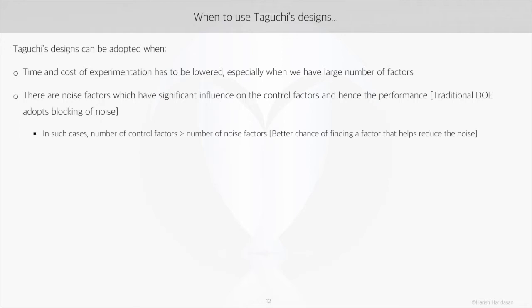The second most useful situation is when the noise factors have significant influence on the control factors and the process performance. In Taguchi's method, the design is modeled on both controllable factors and noise factors, and hence will return a robust process. As a rule of thumb, the number of control factors should be greater than the number of noise factors, as only then we will be in a position to locate a factor that will help reduce the noise.